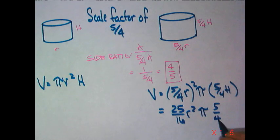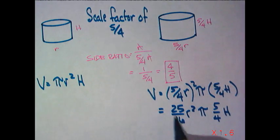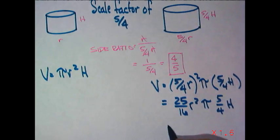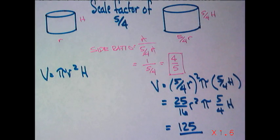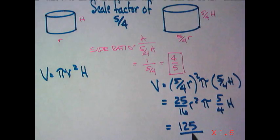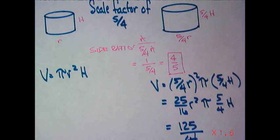times pi, 5 fourths of h. And then, 25 times 5 is 125, 16 times 4 is 64. And then, there's an r squared pi and an h.